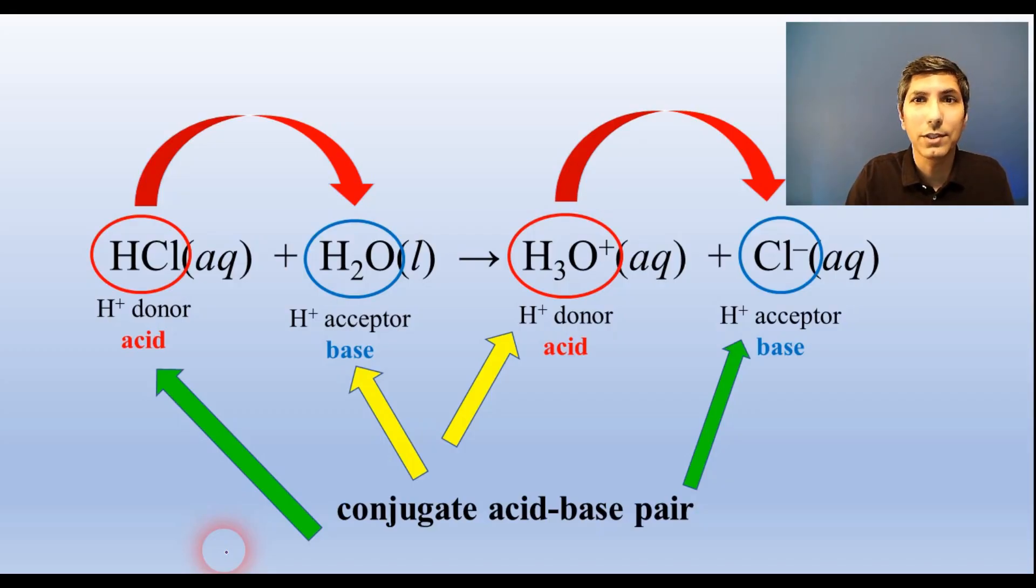Since this reaction goes essentially to completion, that means hydrochloric acid is a very strong acid as it donates pretty much all of its protons to water. On the other hand, chloride hardly accepts any protons at all, so it's an especially weak base. The stronger the acid, the weaker its conjugate base will be, and vice versa.